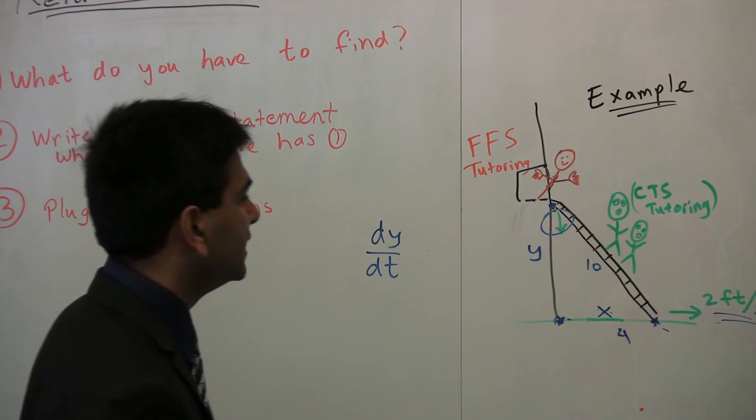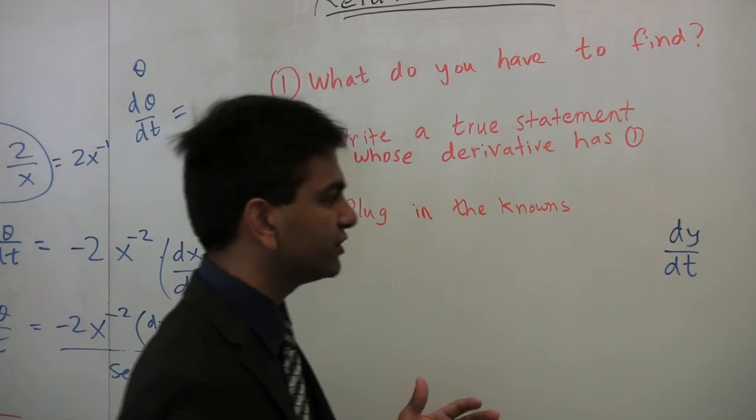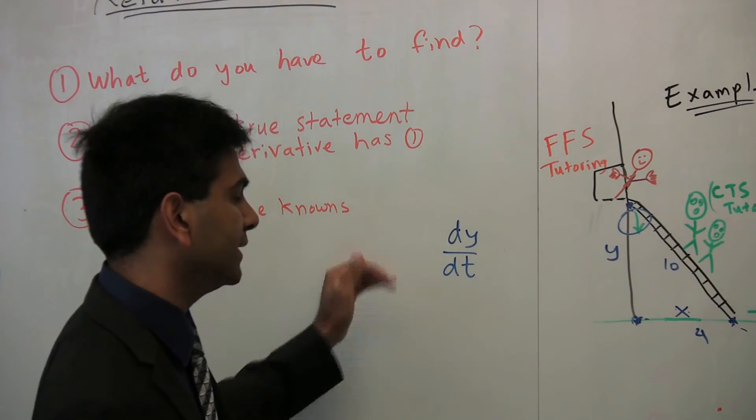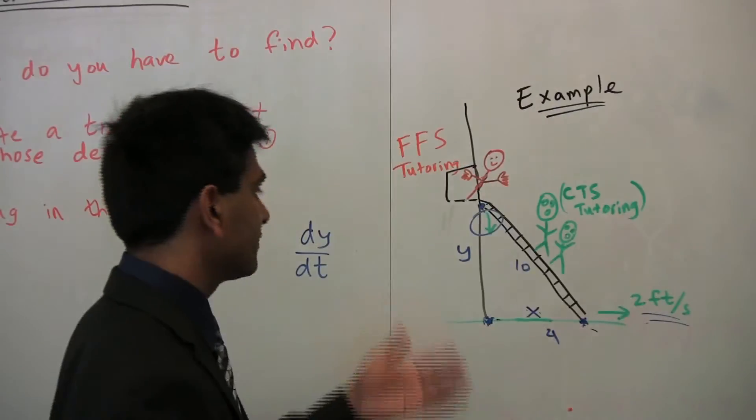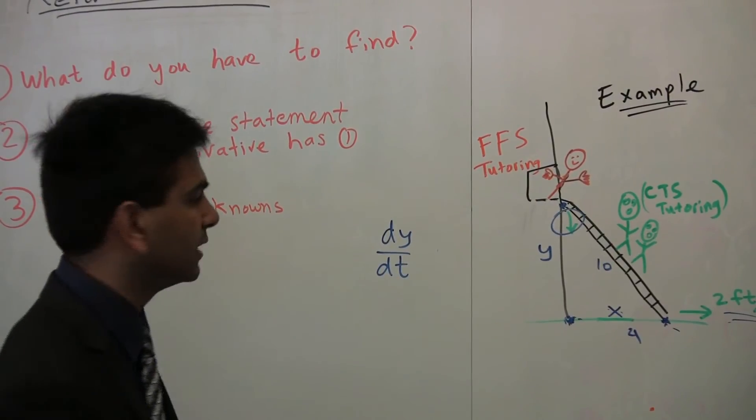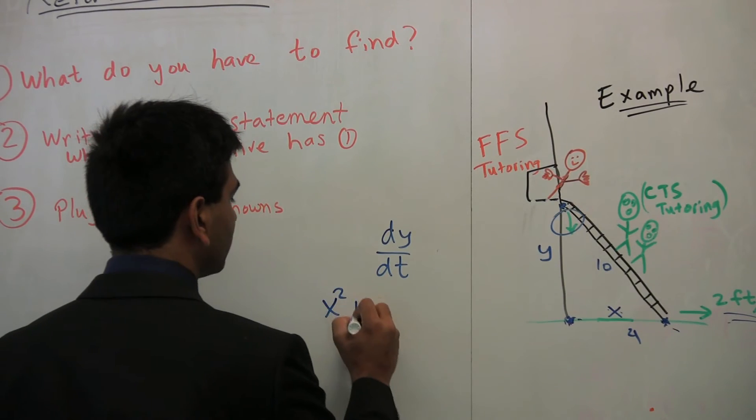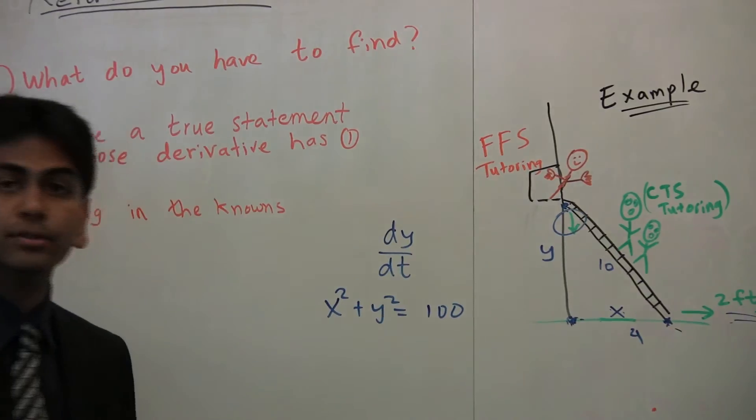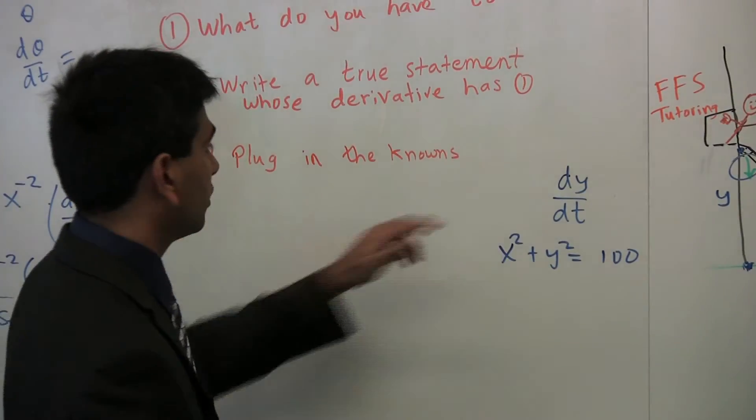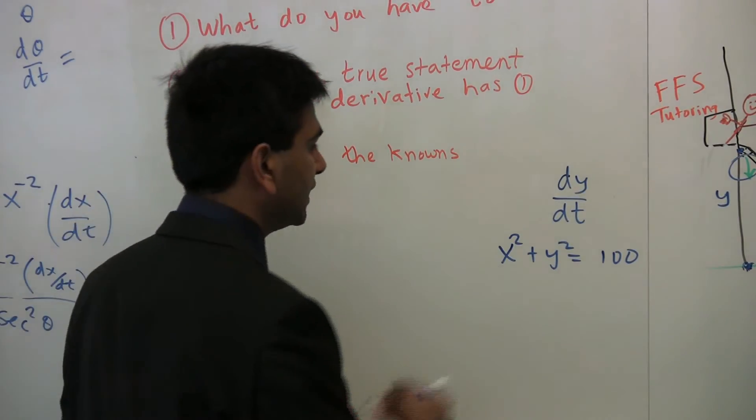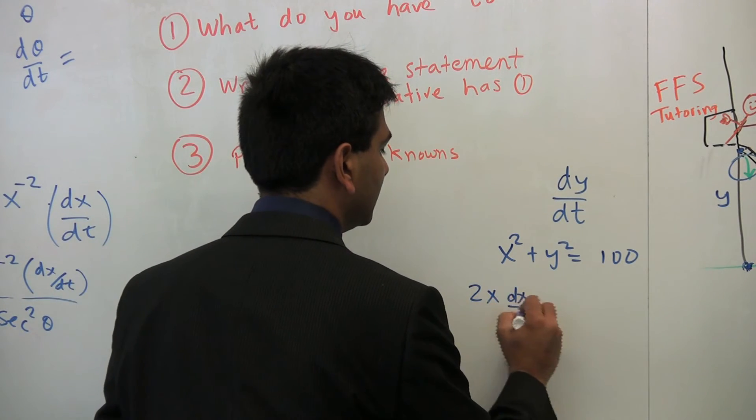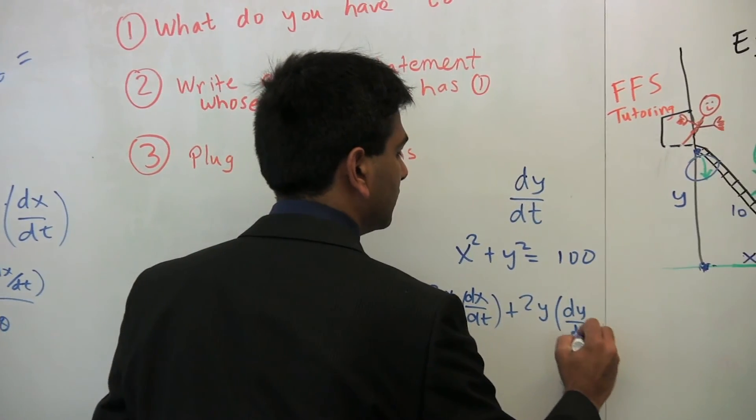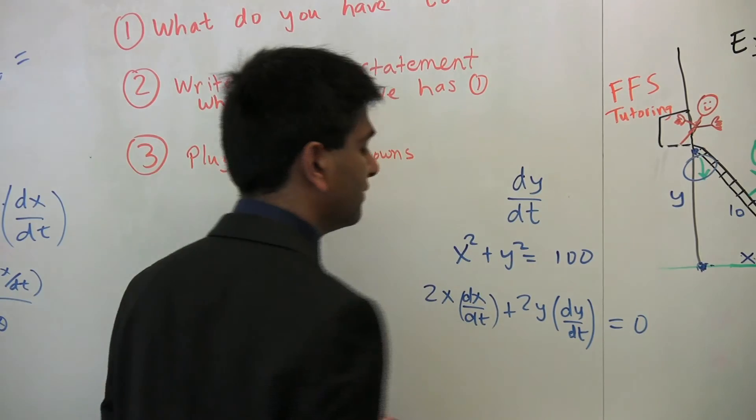So, the question is, what is dy/dt? Now, what we can do is step number two, write out a true statement, which pretty much has y, because that way its derivative will have dy/dt. So, one of the most common statements in this case is actually the Pythagorean theorem. In this case, we know that x squared plus y squared is equal to 10 squared, which is 100. Now, we can use this simple truth to find the derivative and hopefully solve for dy/dt. So, taking the derivative, this is 2x dx/dt plus 2y dy/dt, again, keep in mind the chain rule, equals zero, because that's the derivative of 100.